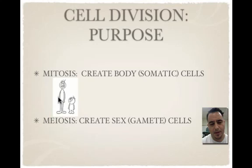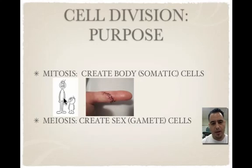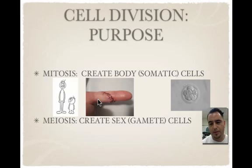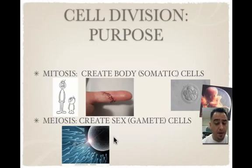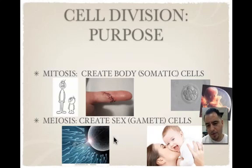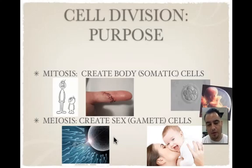Why do we need mitosis? We need it to grow — we get bigger by adding more identical cells to our body. When you get a cut or a bruise, we also do it to replace cells, to repair and replace dead, injured, or old cells. Also to develop — that's how we go from a zygote to a fully developed organism. Meiosis is to create the sperm and egg for the process of reproduction, and it ensures that every offspring is different to ensure variety, which helps us overcome new changes in environments.